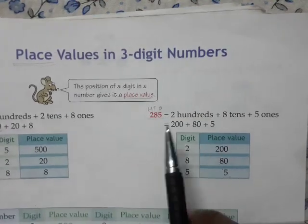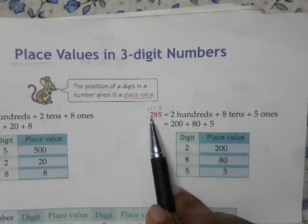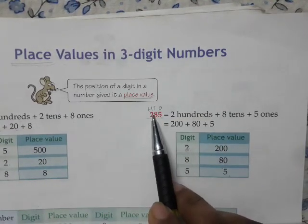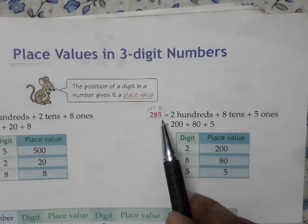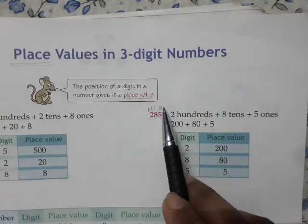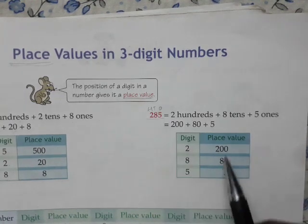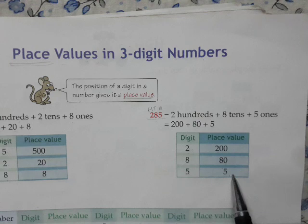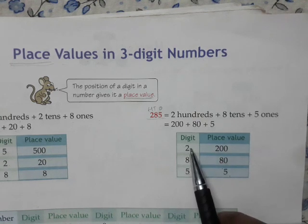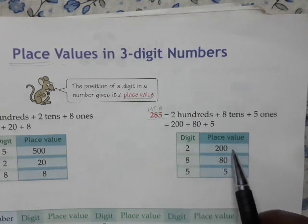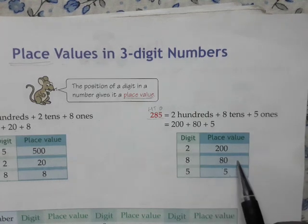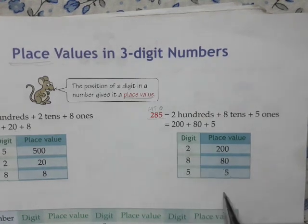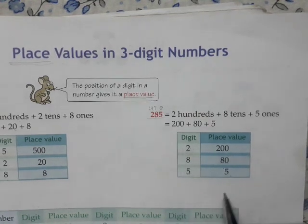Next example: 285. 2 is in the 100's place, 8 is in the 10's place, and 5 is in the 1's place. So the place values are: 2 → 200, 8 → 80, and 5 → 5.